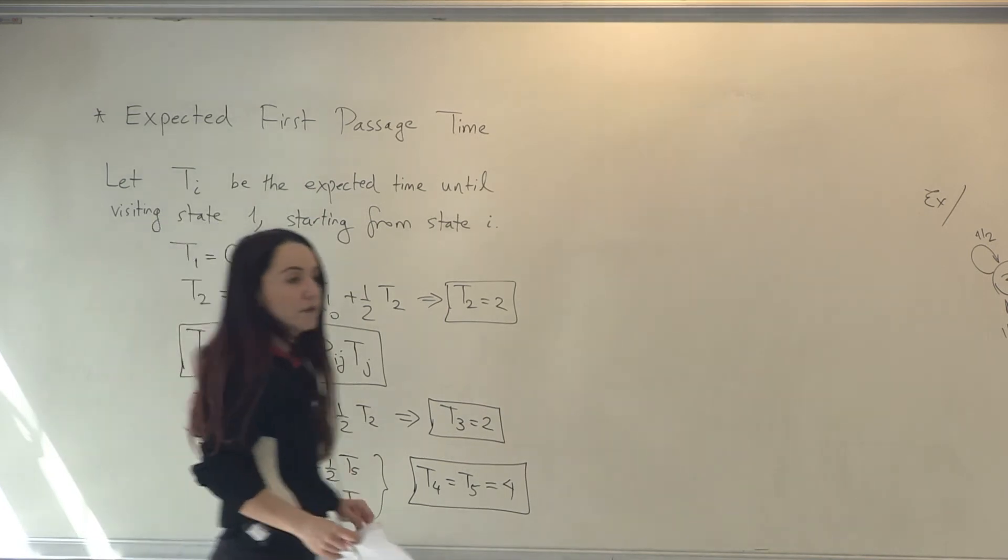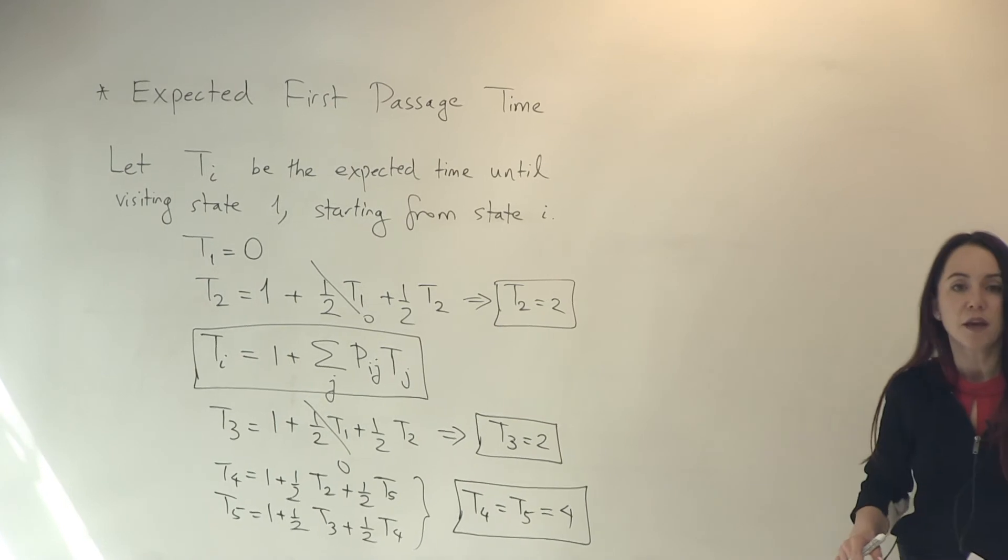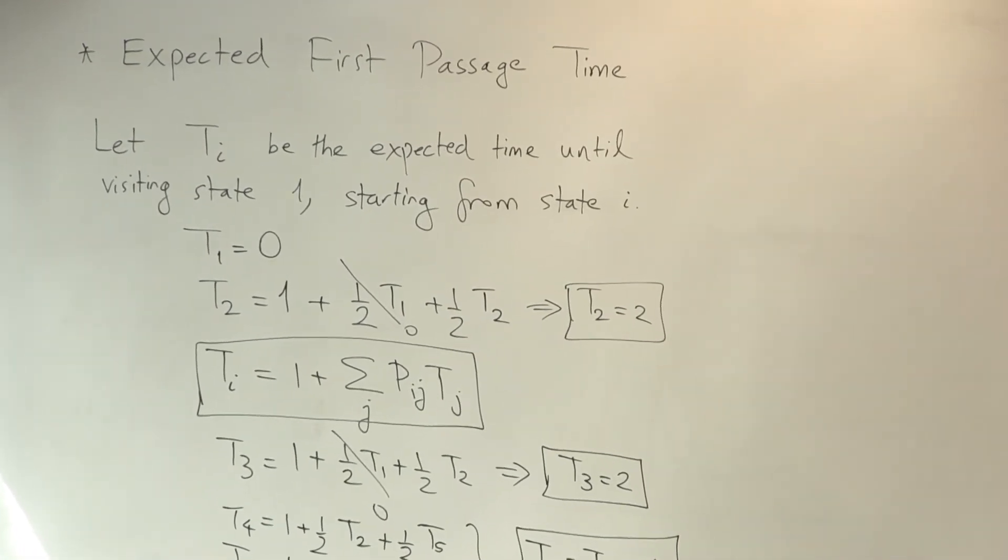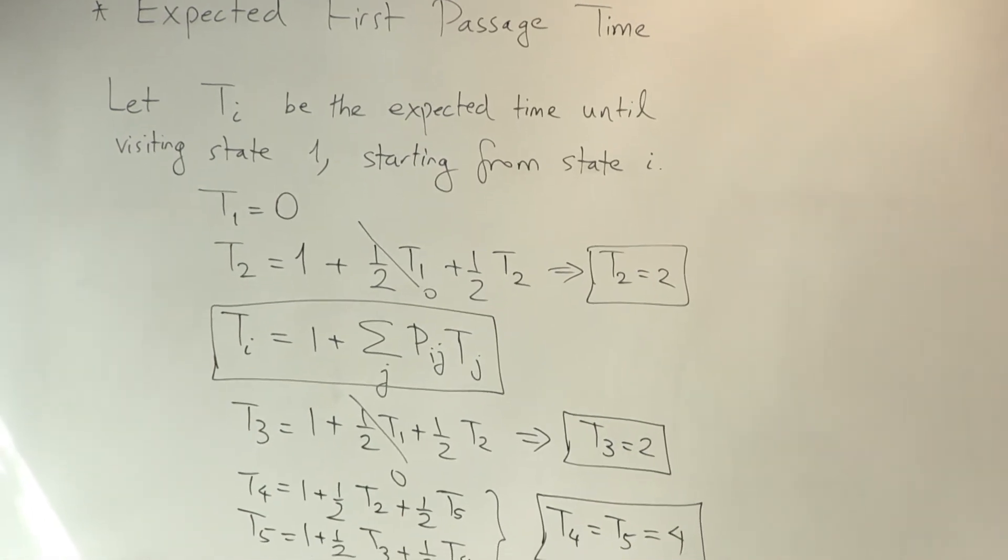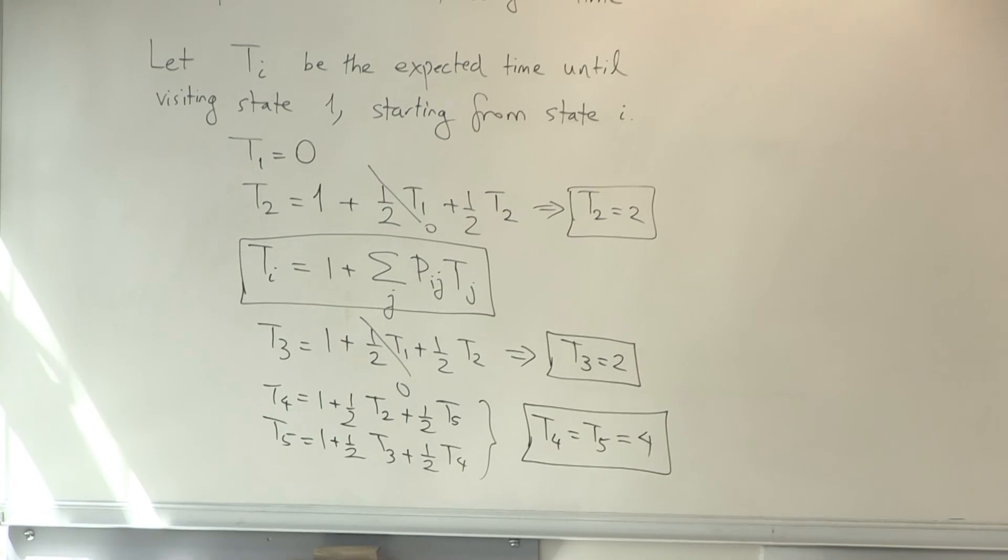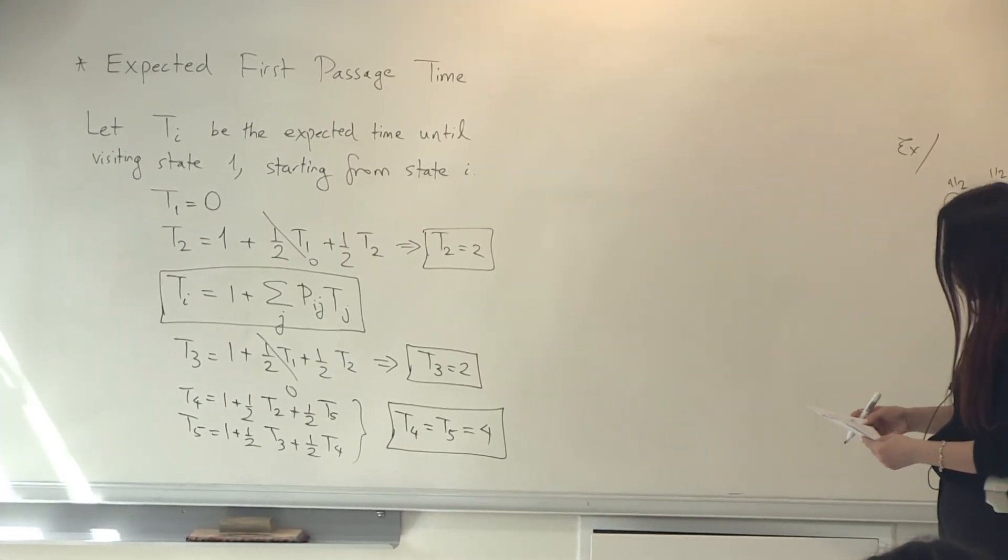Okay, now that I've computed the expected first passage times, can I maybe use this as an alternative way of finding the mean recurrence time for state 1? That is what we are going to handle in part B of this problem.